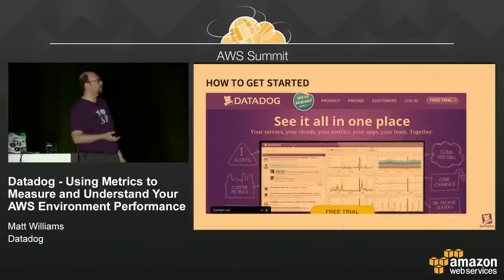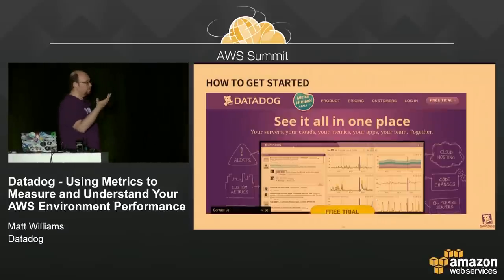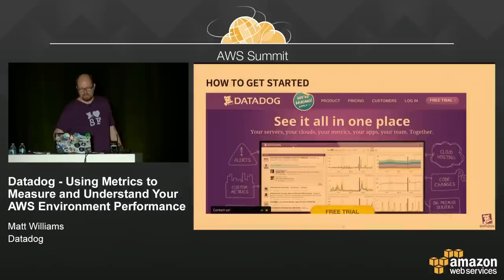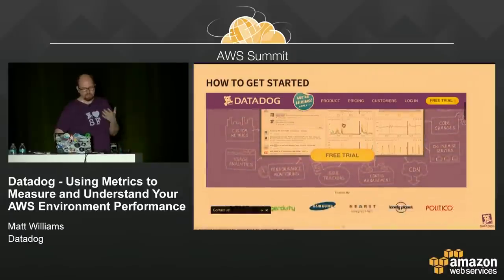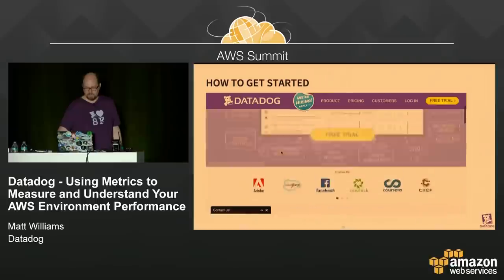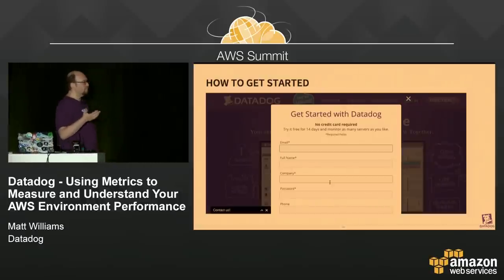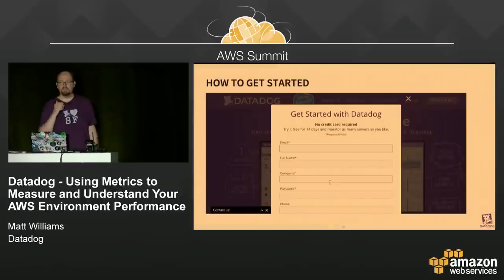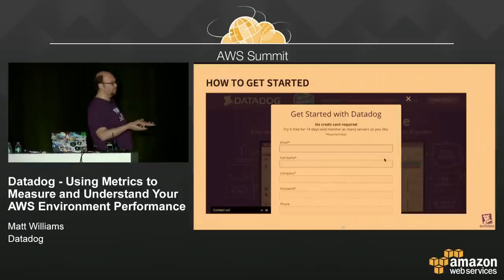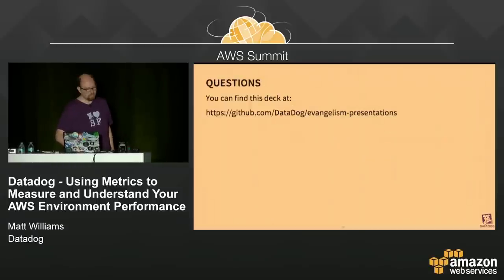So those were some of the key metrics that we've seen and that some of our customers have found really good to keep in mind. How do you get started? We recommend Datadog. Go to datadoghq.com — there's a two-minute video that shows you what we do. Sign up for a free trial — no credit card needed, 14 days. If you don't like it enough, you can continue using it for five hosts or less for free. If you really like it, it's about $15 per host per month.